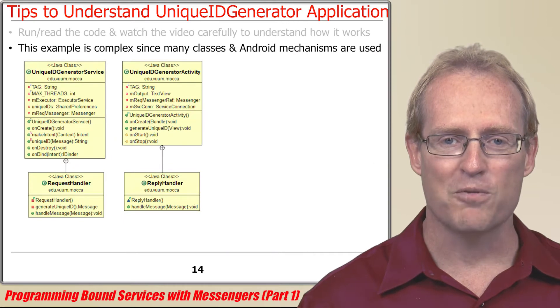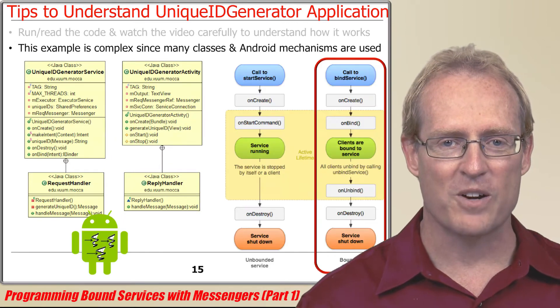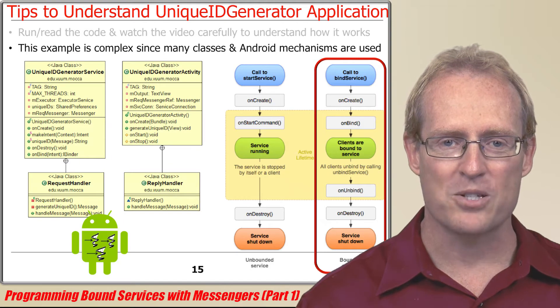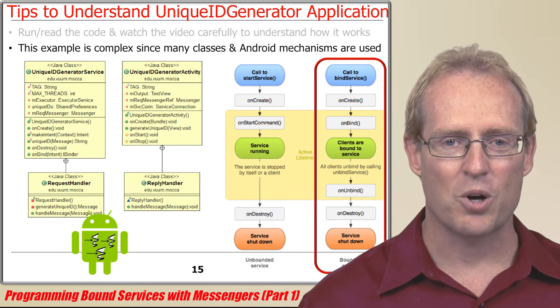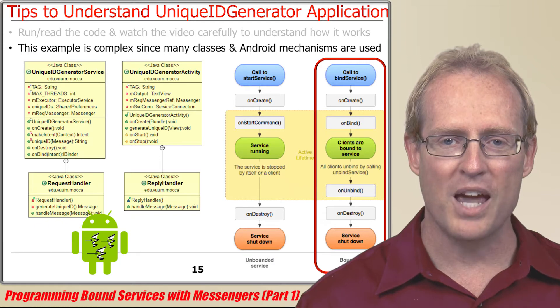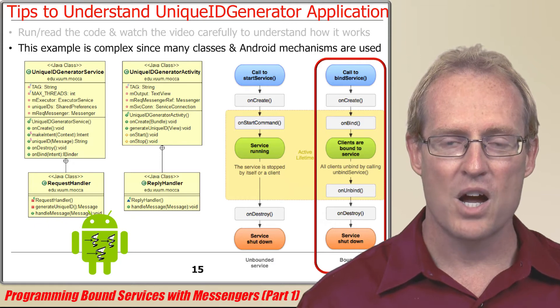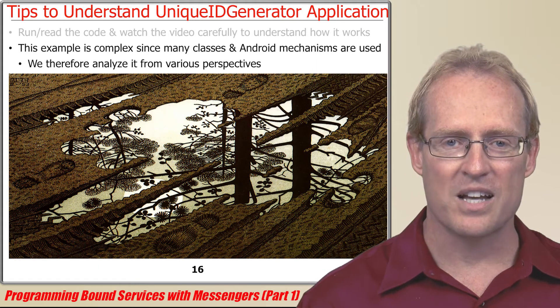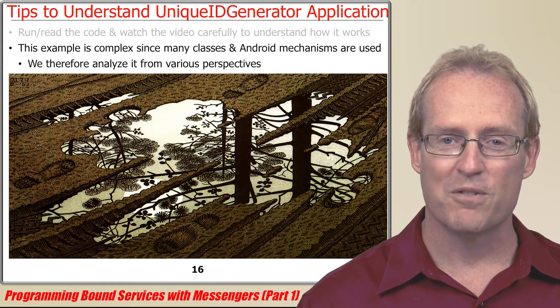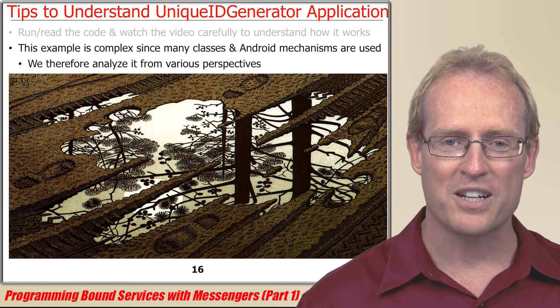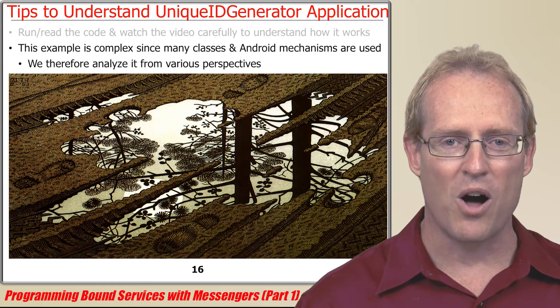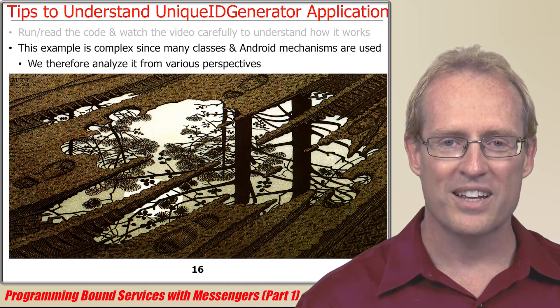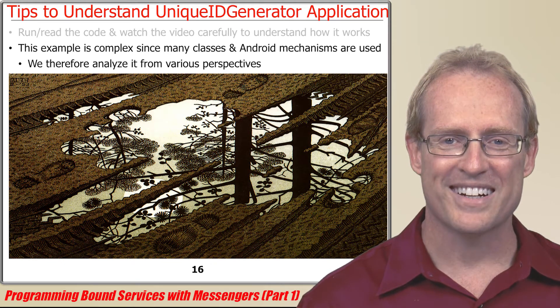This example contains four primary classes, as well as various Android bound service, concurrency, and communication mechanisms. We'll progressively analyze the design and implementation from various perspectives to show how all the pieces work and fit together.